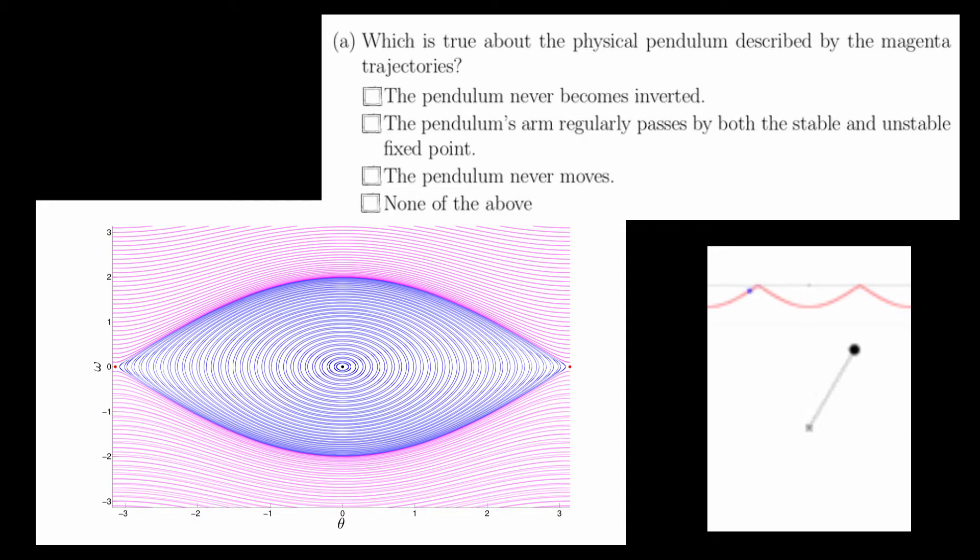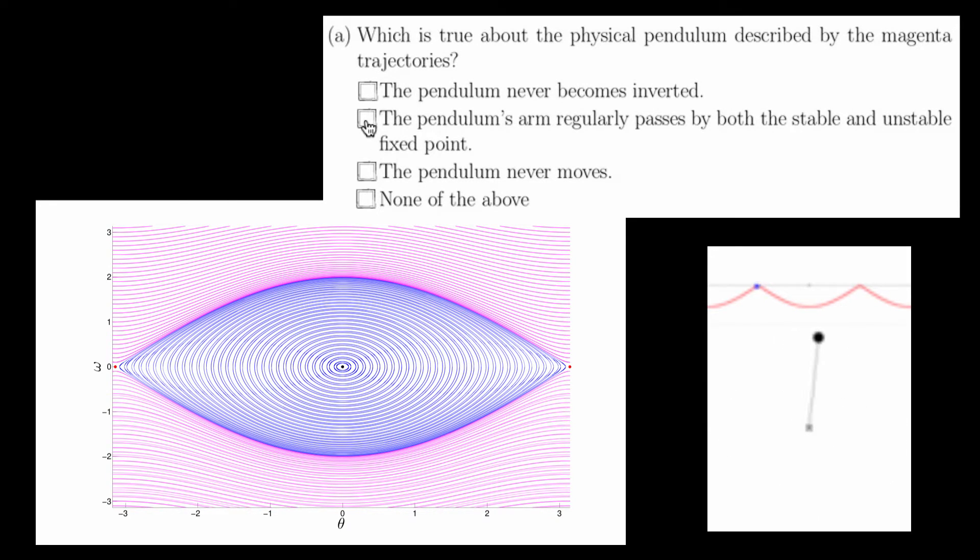Notice also that each magenta trajectory also passes through theta equals zero. In fact, it's the case that the magenta trajectories have theta values of both even and odd multiples of pi. This means that the pendulum arm regularly passes by both the stable and unstable fixed points. So the second answer is correct.